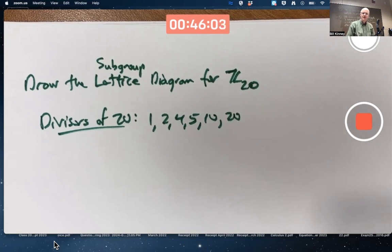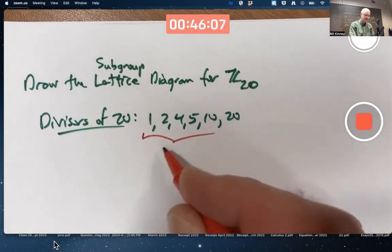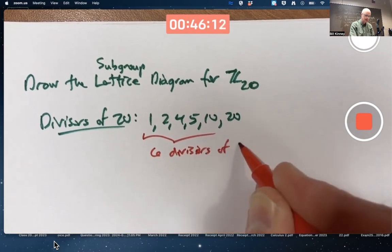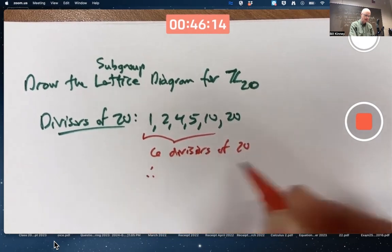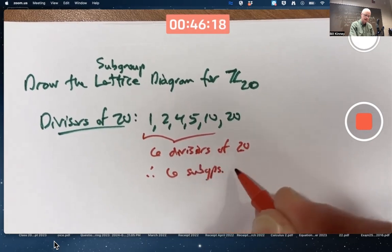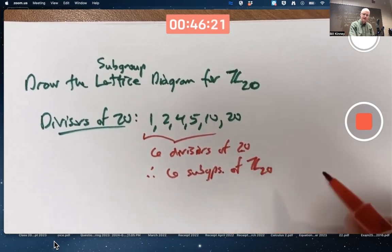That's 1, 2, 3, 4, 5, 6 divisors of 20. Therefore 6 subgroups of Z20, since Z20 is cyclic.